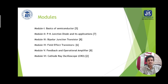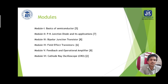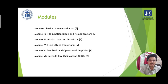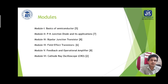This course is comprised of six modules. Five contact hours are assigned to module one on basic semiconductors, and seven contact hours are assigned to module two on PN junction diode and its applications. Module three has eight contact hours on bipolar junction transistor. Module four has field effect transistor to be described within six contact hours. Eight contact hours are assigned to module five where feedback and operational amplifiers will be discussed, and two contact hours are assigned to module six where the cathode ray oscilloscope will be discussed.